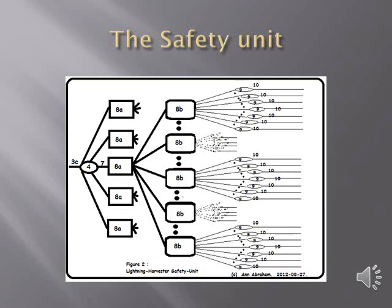The safety unit consists of a pattern recognition detector labeled 4 that detects the current voltage specification of the electric charge conducted to it from the conductor labeled 3c. Based on the incoming current voltage, a switch is thrown that routes the charge via a wire labeled 7 to a switch box labeled 8a handling that incoming current voltage specification.